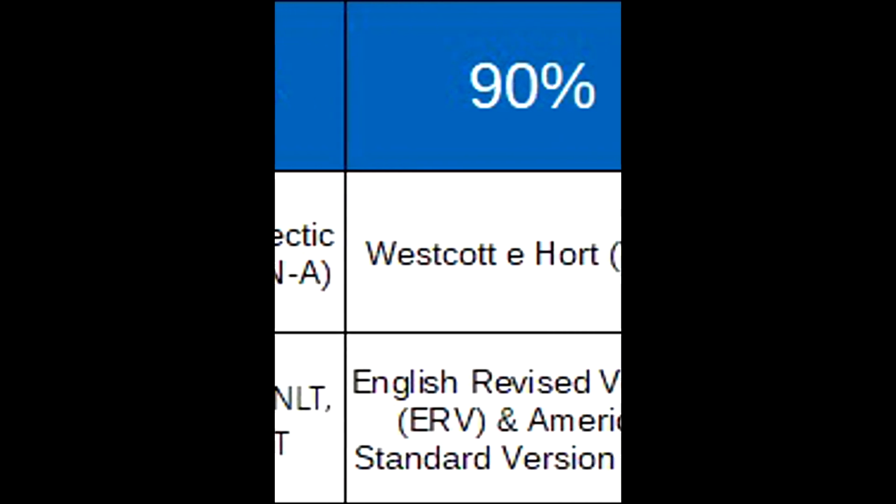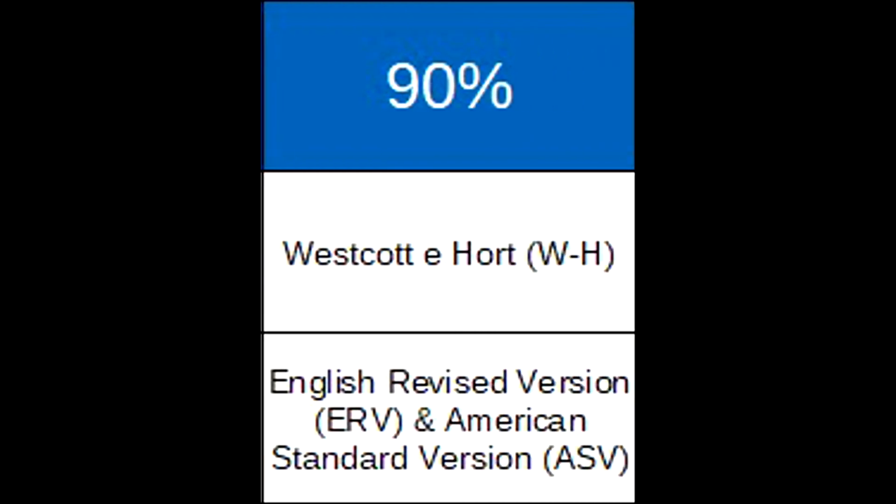There is another text — Westcott and Hort — which is at 90% on the graphic. This text lost its importance because today only Jehovah's Witnesses use it. But we have the English Revised Version (ERV) and the American Standard Version (ASV), which are based on it. So those versions lost their importance because only Jehovah's Witnesses use those Bibles. We have to make clear here that we are not evaluating the work of the translator — we are only talking about the Greek text that the translator had in hand to make his translation.